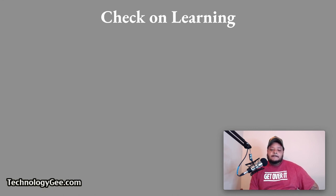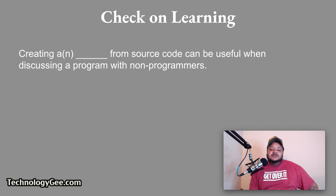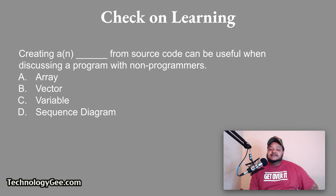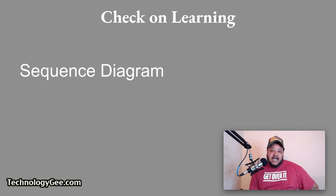Question number two, creating a blank from source code can be useful when discussing a program with non-programmers. Would it be an array? Would it be a vector? Would it be a variable? Or would it be a sequence diagram? So creating a blank from source code can be useful when discussing a program with non-programmers. The correct answer would be a sequence diagram. So think of a sequence diagram as you sitting down here talking to your friend, trying to describe what the program does and you are literally drawing it out on a piece of paper saying that it's supposed to go from point A to point B to do this, to do this, to do that. You could think of a sequence diagram in those terms.